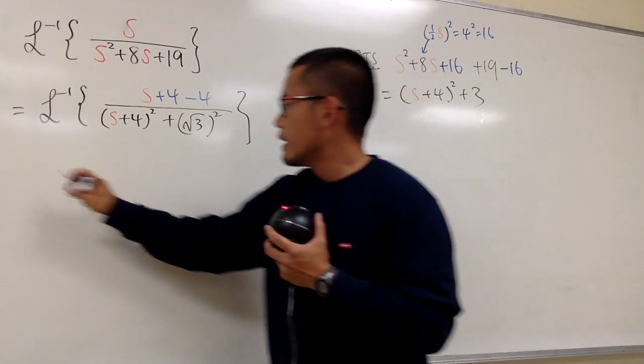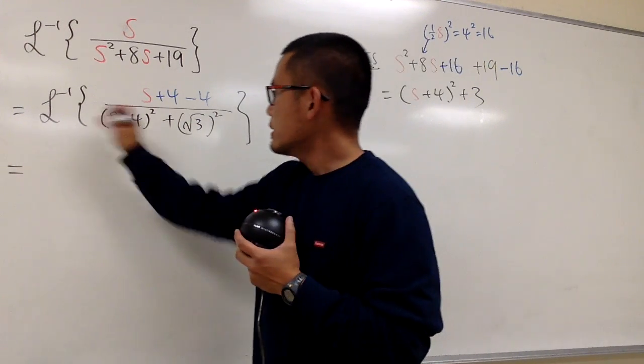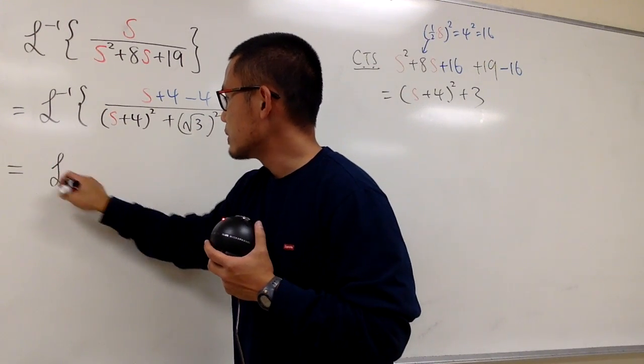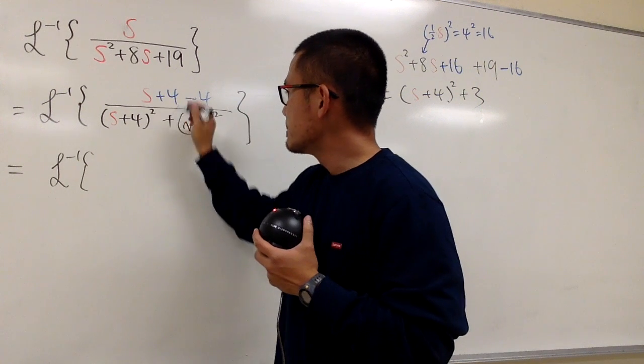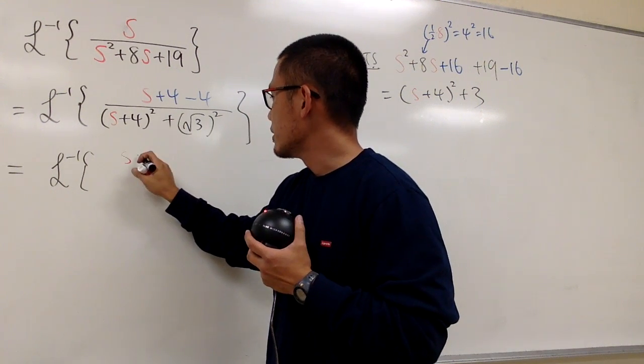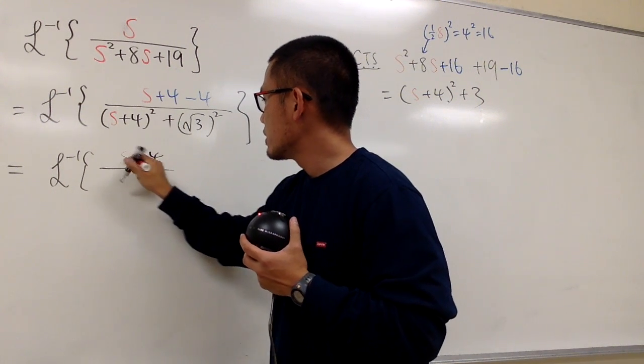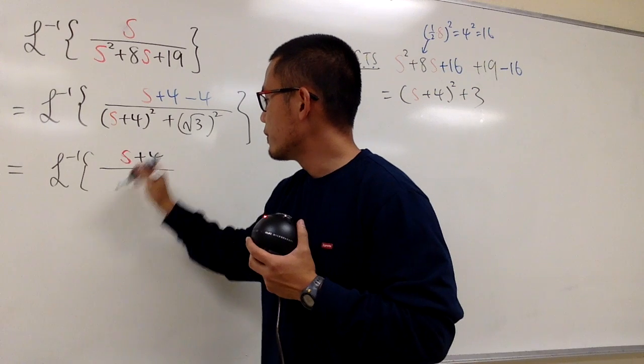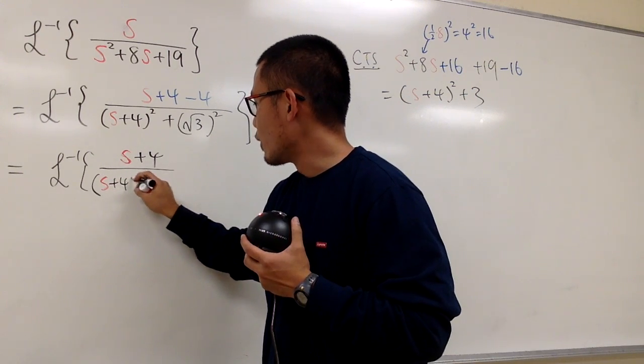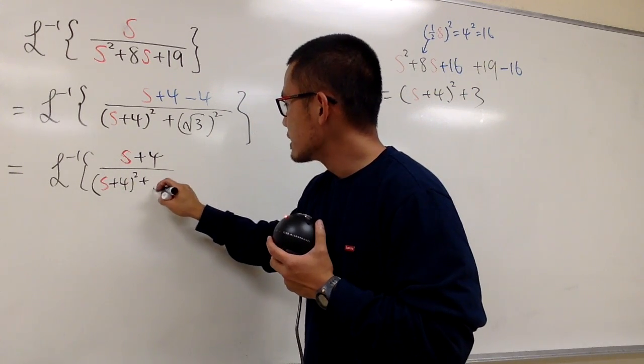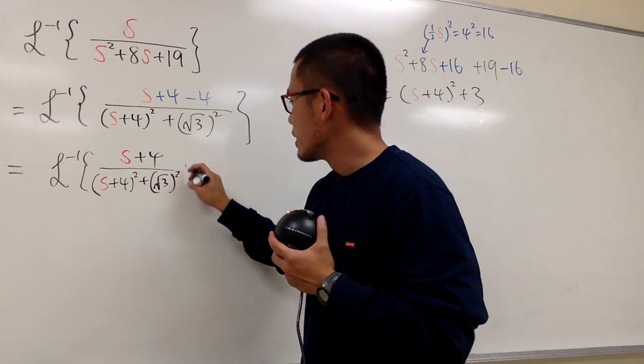So now I will break this apart for you guys. The first inverse Laplace will be s plus 4 over s plus 4 squared, and then plus square root of 3 squared.